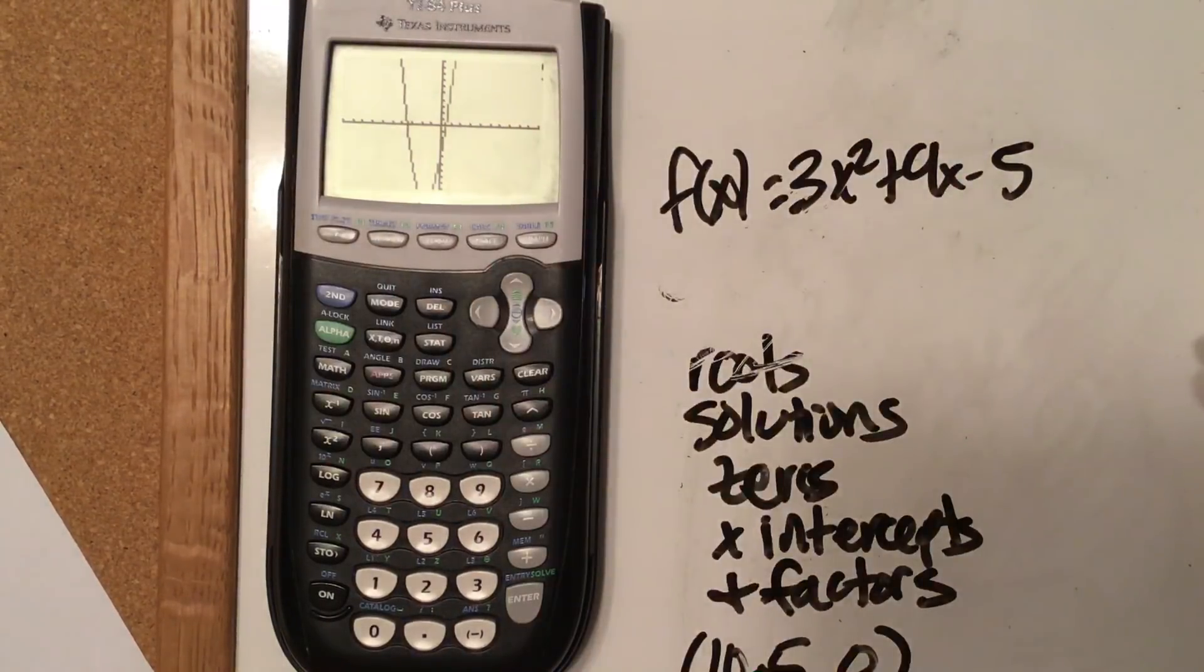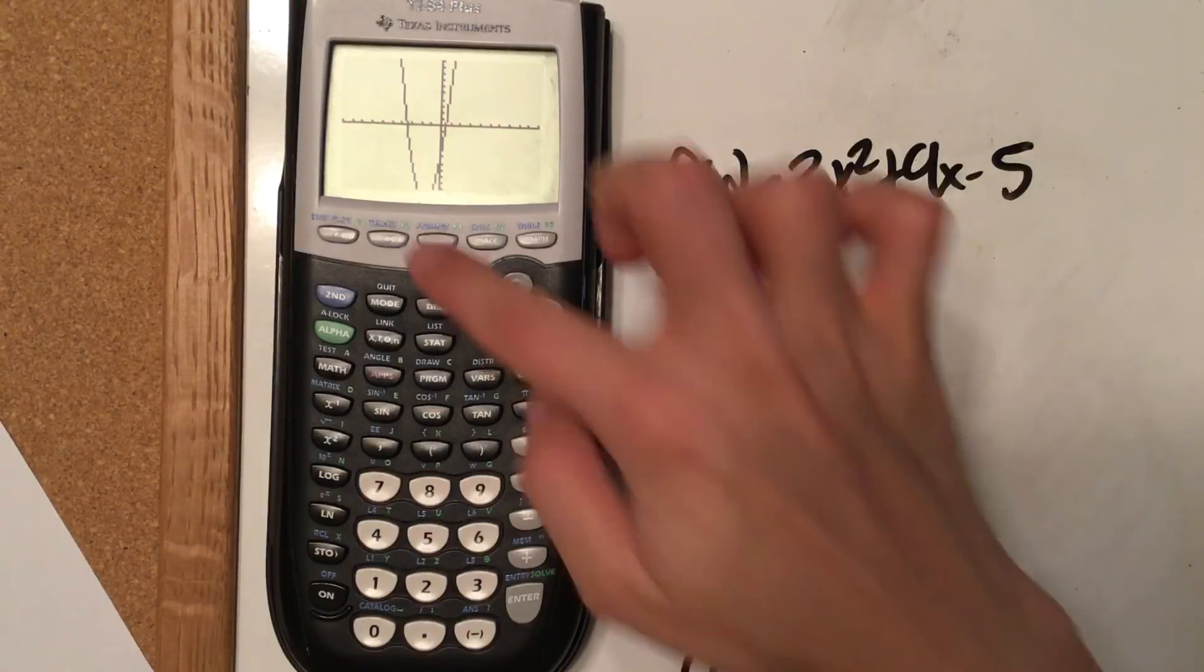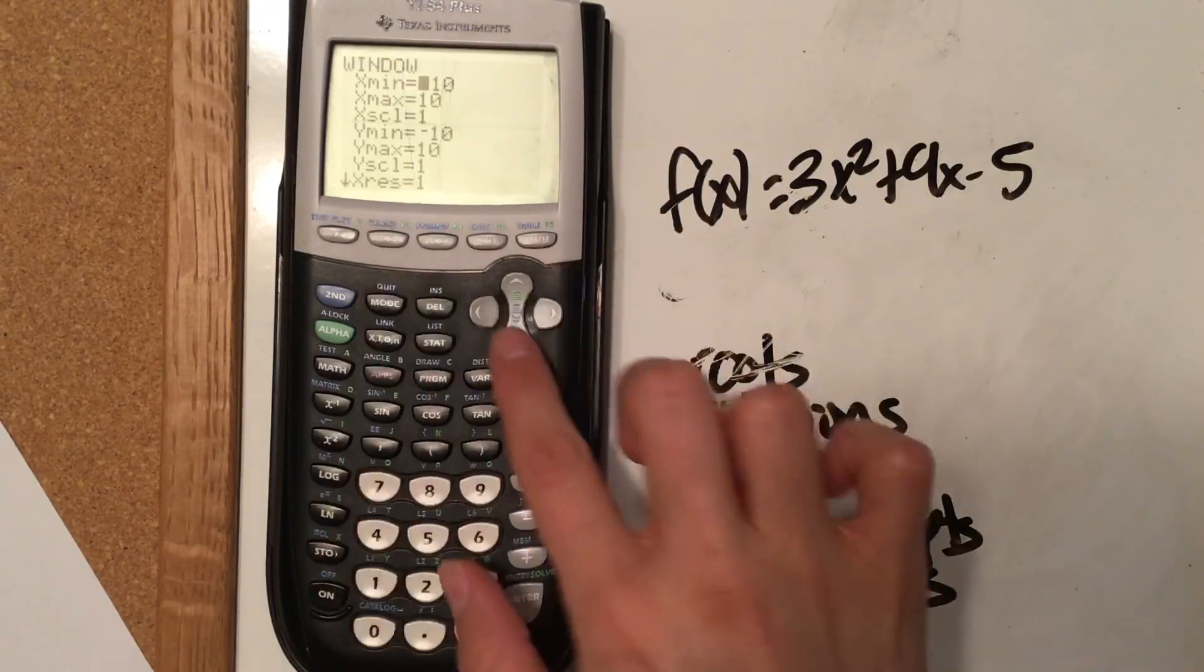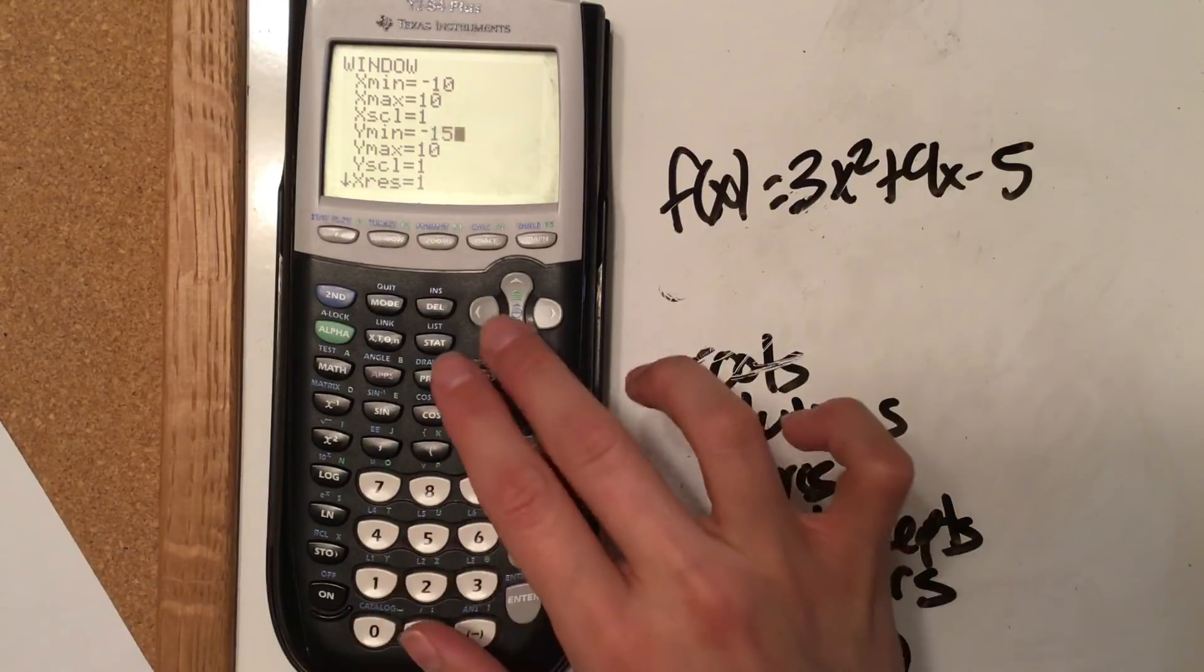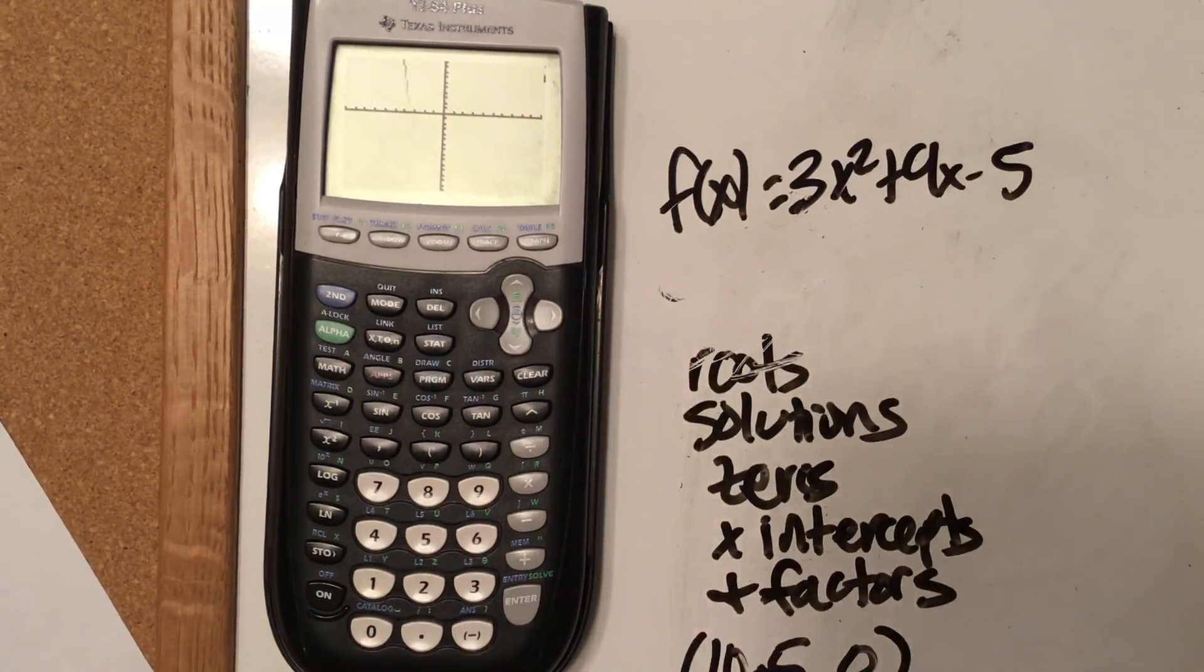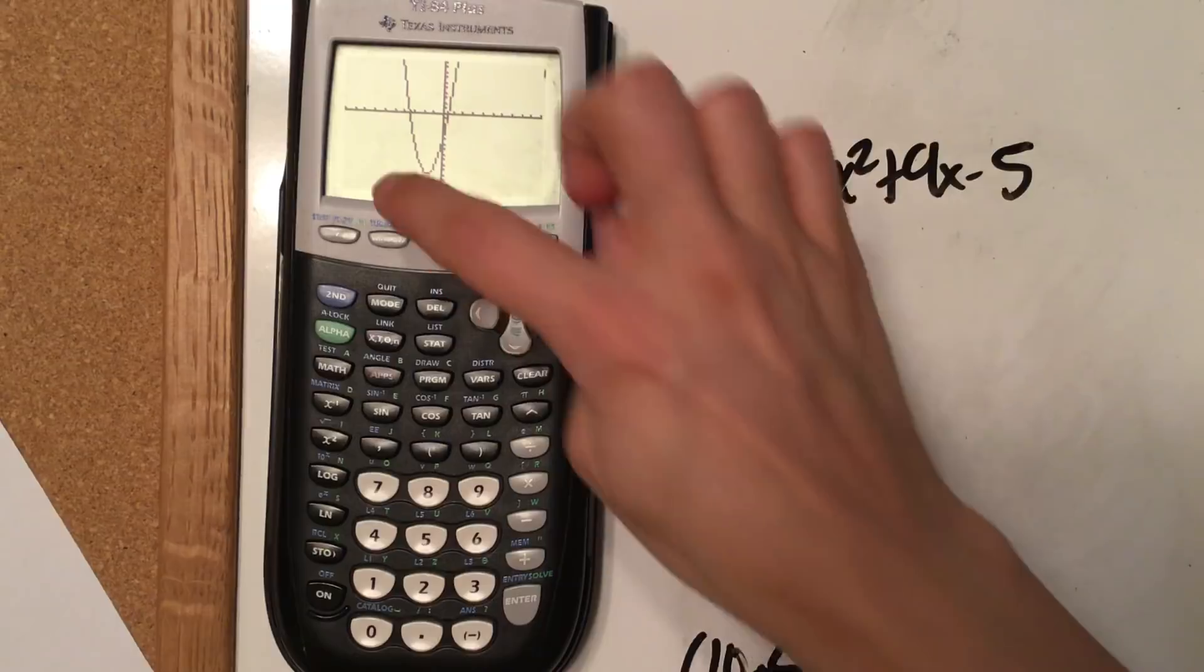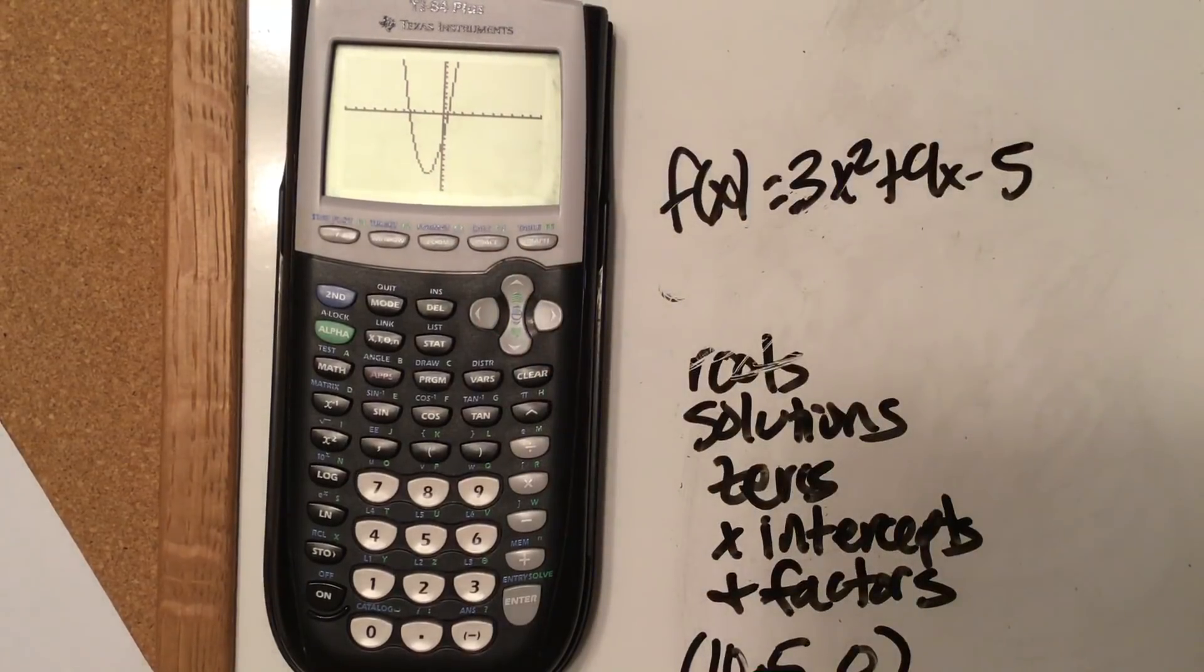If you are not liking, you can hit Zoom 6 again, and it will go back to the nice-looking one. And if it bugs you that you can't see the bottom, you can go back to your window and say, hey, I need to go down a little bit further. So like negative 15. And you can have it so that you can see the whole graph. So you can see the min and the x-intercepts. All of it is great.